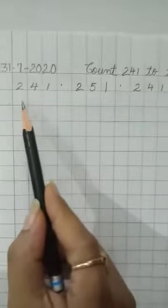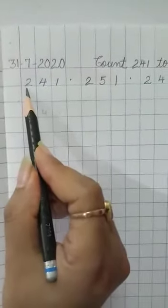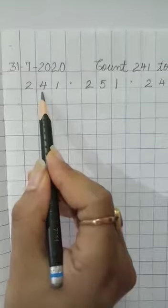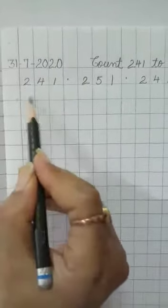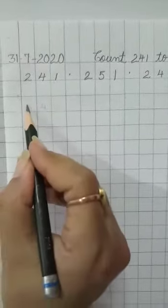Our first number is 241. For it we write 2 in the first box, 4 in the second box and 1 in the next box. Now leave a line. Write next number.